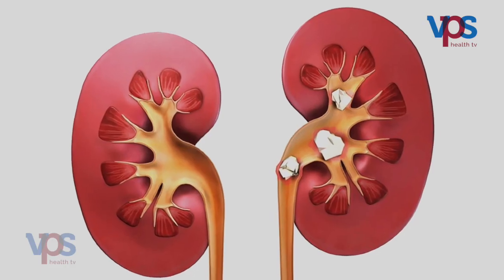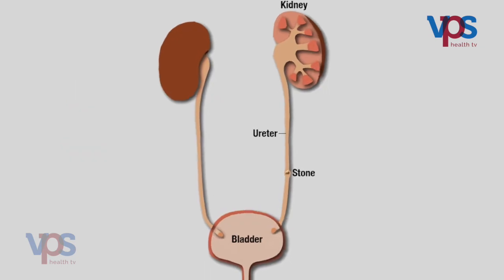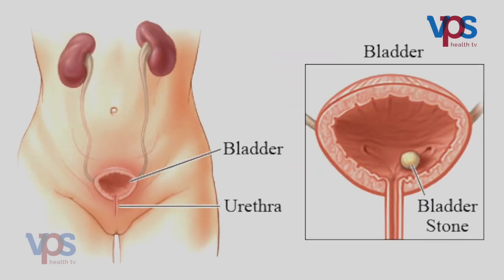Once the stone is identified, we have to find out where the stone is — whether it is in the kidney, the ureter, or in the bladder — and according to that is how the treatment is done.